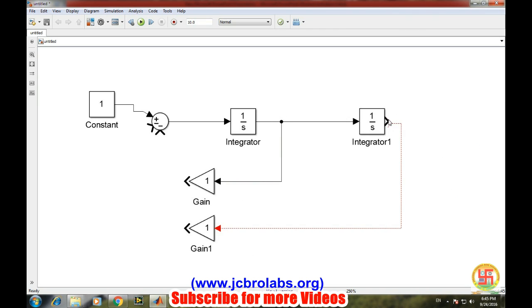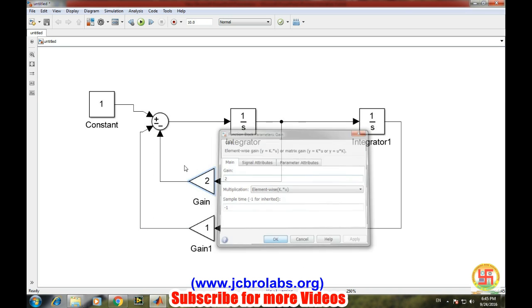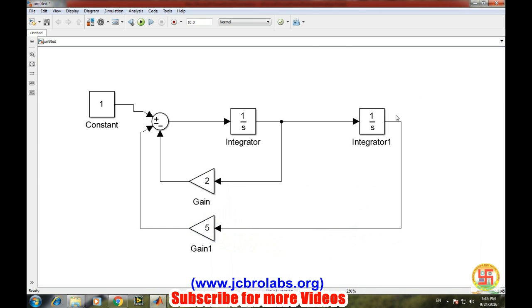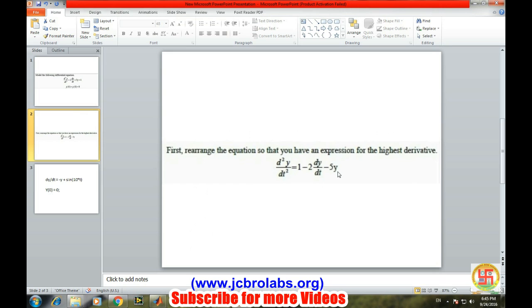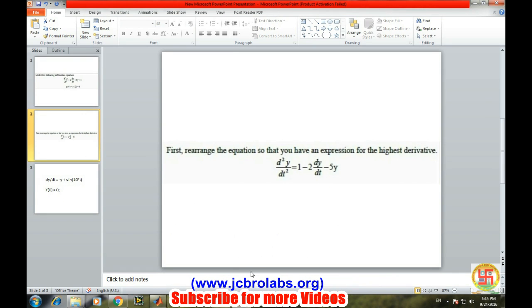The value of this gain block will be two as we have already taken the minus sign there, and the value of this gain block will be five. And this is our final output because it has to be integrated twice, and this two times and this has to be integrated only by single time.